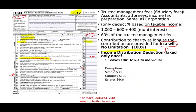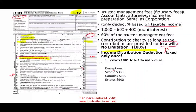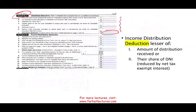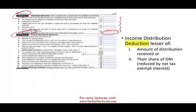The charitable deduction comes from Schedule A, line 7, and gets plugged into page one. The income distribution deduction comes from Schedule B, line 15, and goes to line 18 on page one. Now let's talk more about DNI — distributable net income.